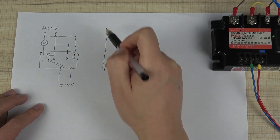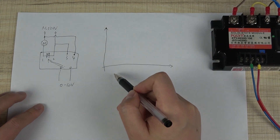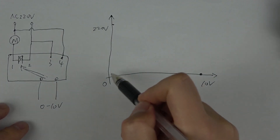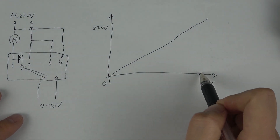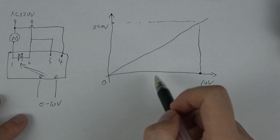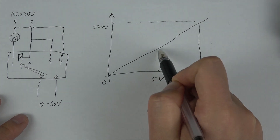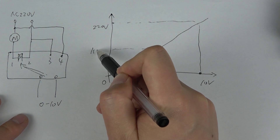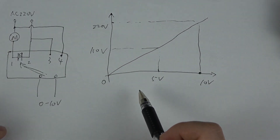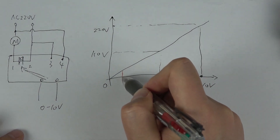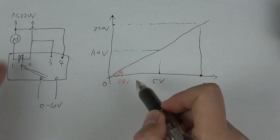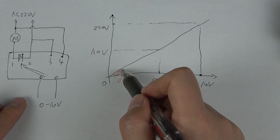Let me make a diagram — just like this. At 10 volts input, you can see a line just like this. If the input is 10 volts, the output voltage is 220 volts. And if your input voltage is 5 volts, just like this, the output voltage is 110 volts. So this is the input and output relationship of the SSR. The SSR will have a threshold — this is 0.8 volts. This is the threshold.